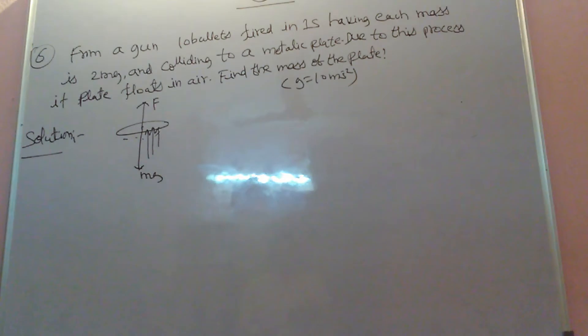A gun fires ten bullets in one second, each having a mass of 2 milligrams. These bullets are colliding with a metallic plate. Due to this process, if the plate floats in air, find the mass of the plate.